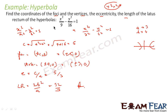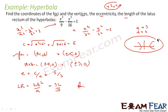Very simple. We have just compared this equation with x squared by a squared minus y squared by b squared is equal to 1. We got the value of a and b, we got the value of c. Foci is equal to (±c, 0) because this is of this form of hyperbola, so it will be on the x-axis. Similarly, vertices will also be (±a, 0).